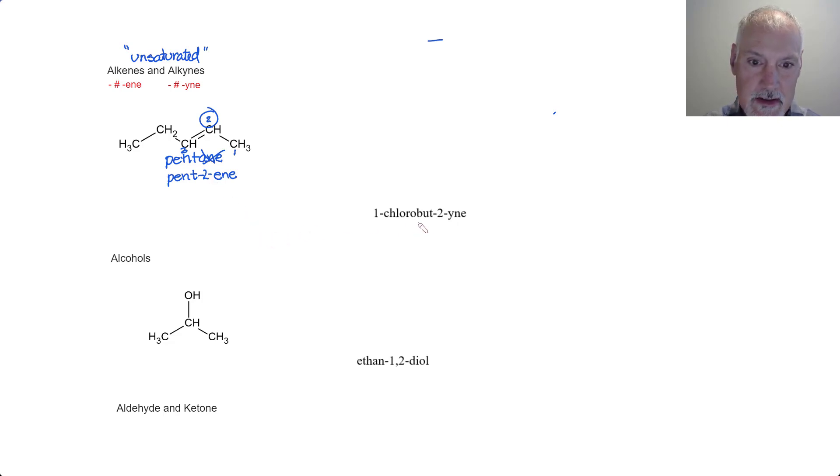Let's try drawing this one. Butyne - yne indicating a triple bond. But, four carbons. So let's put the triple bond there. And one chloro indicating a chlorine is attached on the first one. Making sure all the carbons have four bonds, and then I'll proceed to add the hydrogens.